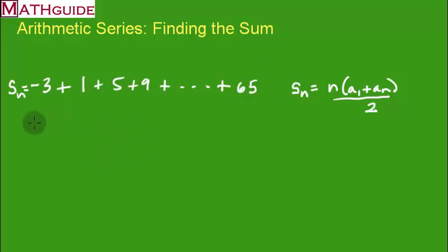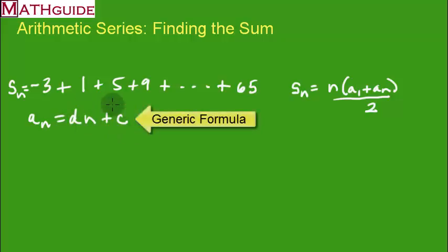The generic formula is always going to be the common difference times N plus some constant. So once we know the formula that will generate the values in our series, we could use this to find the N value. Well, let's start with the common difference.